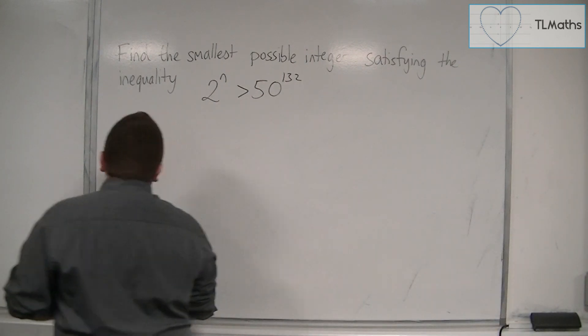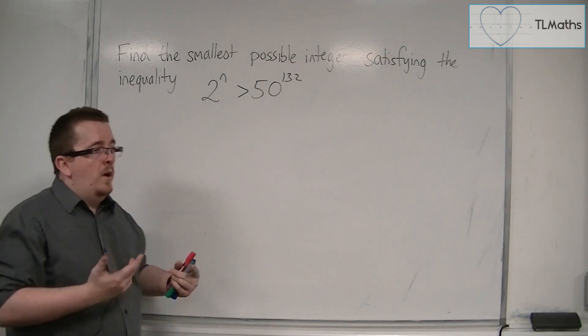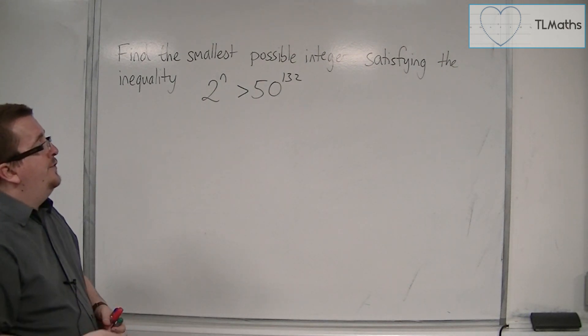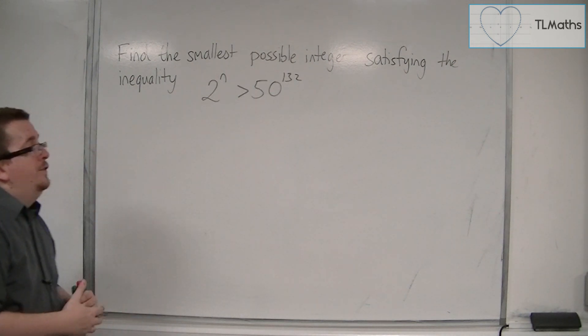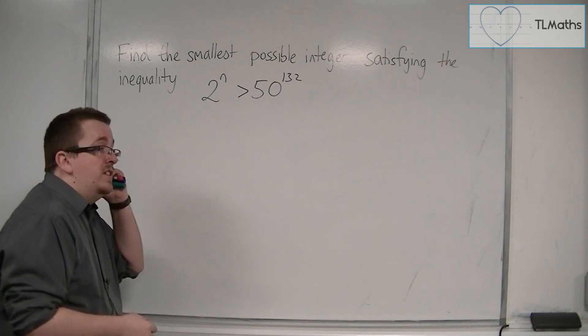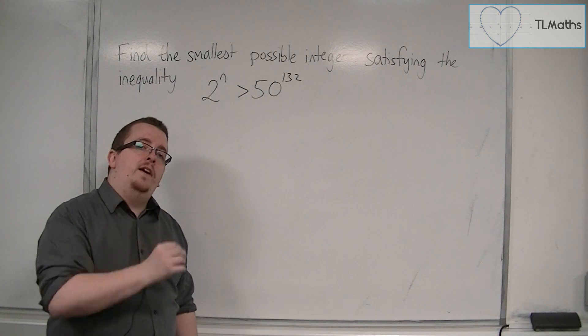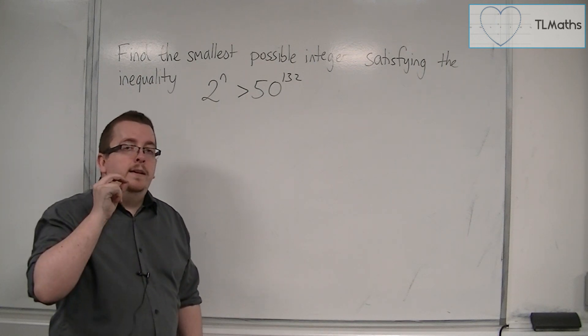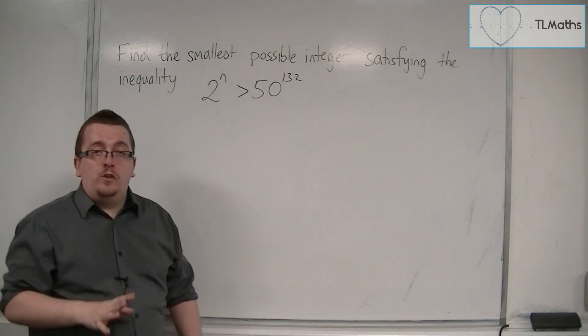To solve an inequality like this, you might think you can work out 50^132 on a calculator and use trial and improvement. The problem is that 50^132 is a very large number, far larger than the calculator can work with. So that idea goes out the window.